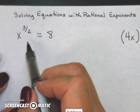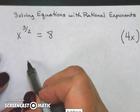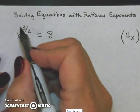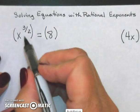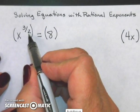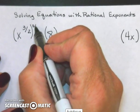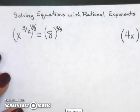This problem can be written in a number of different ways, but the easiest way to solve this problem is to raise both sides to the same power so that this power of 3 halves is canceled out. So I'm going to use the reciprocal of 3 halves, which would be 2 thirds. And if I do one side, I must do both.